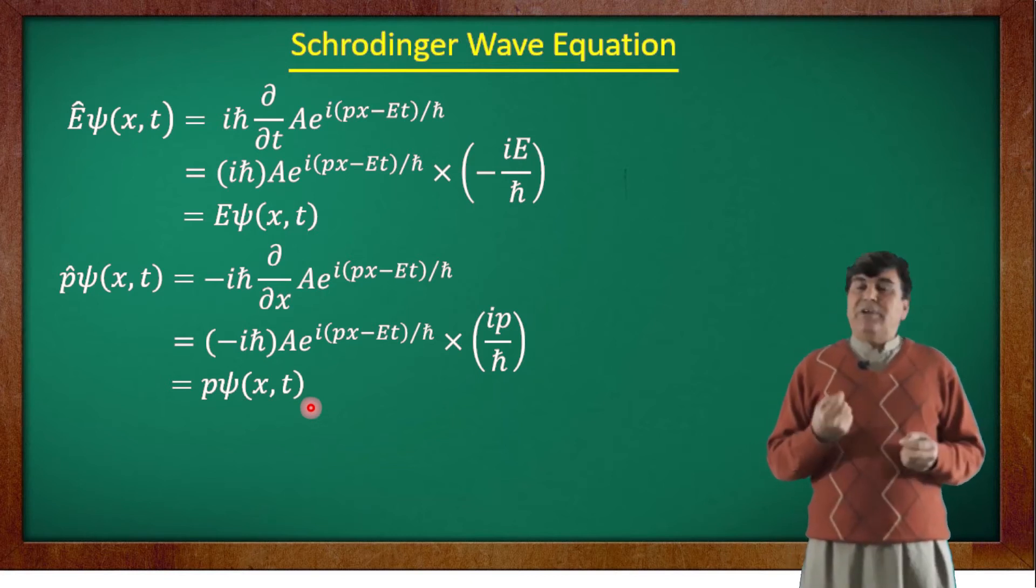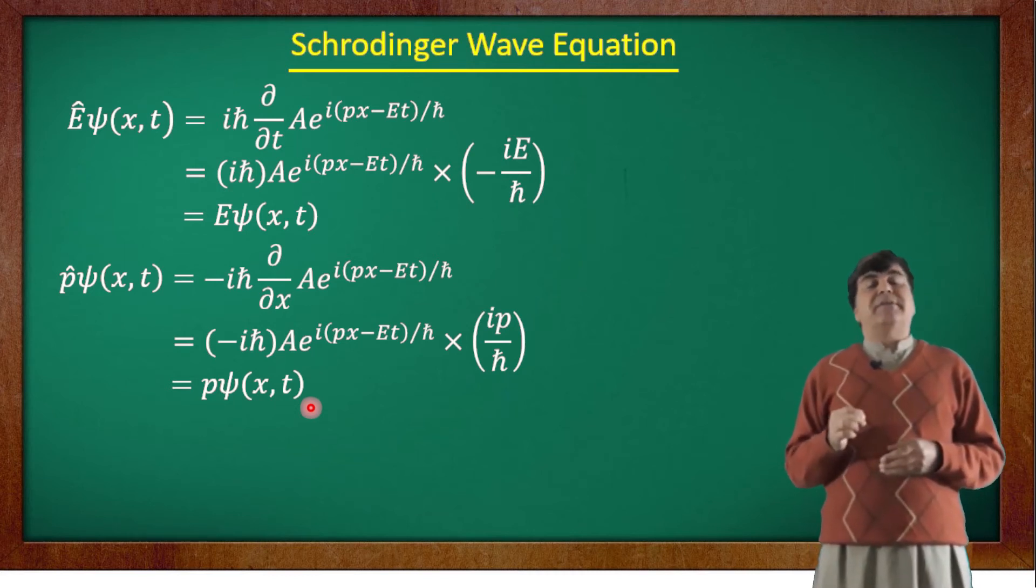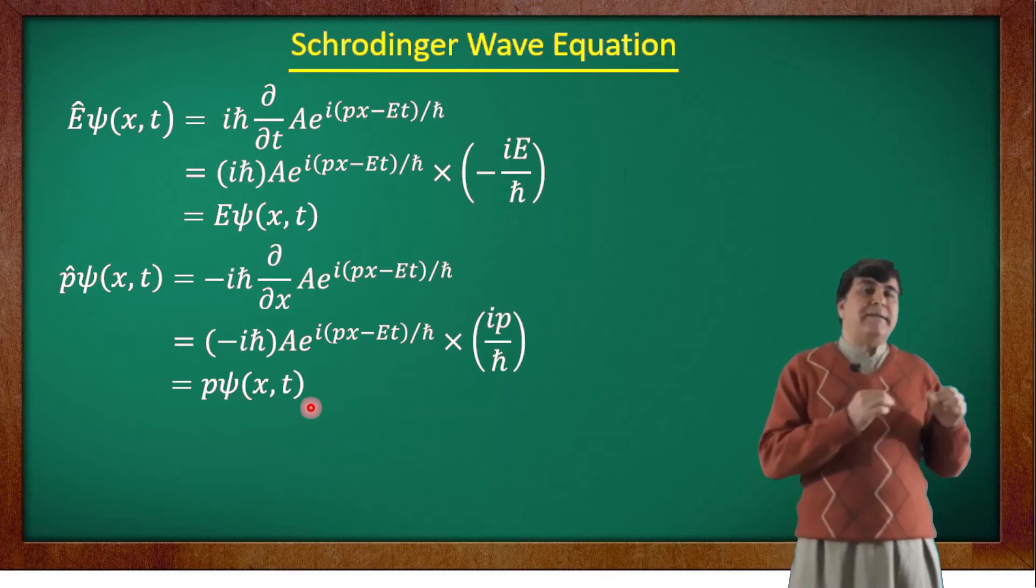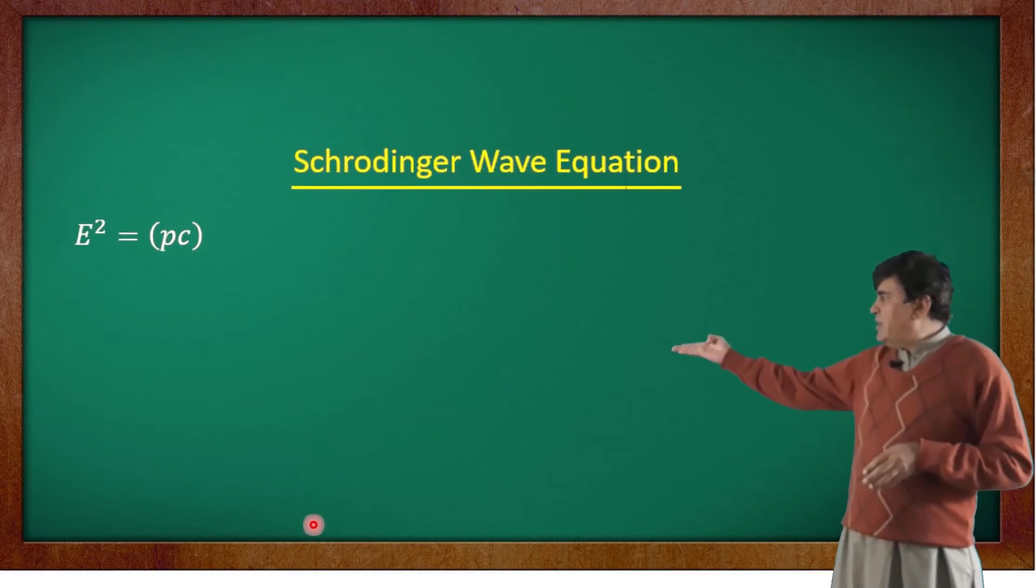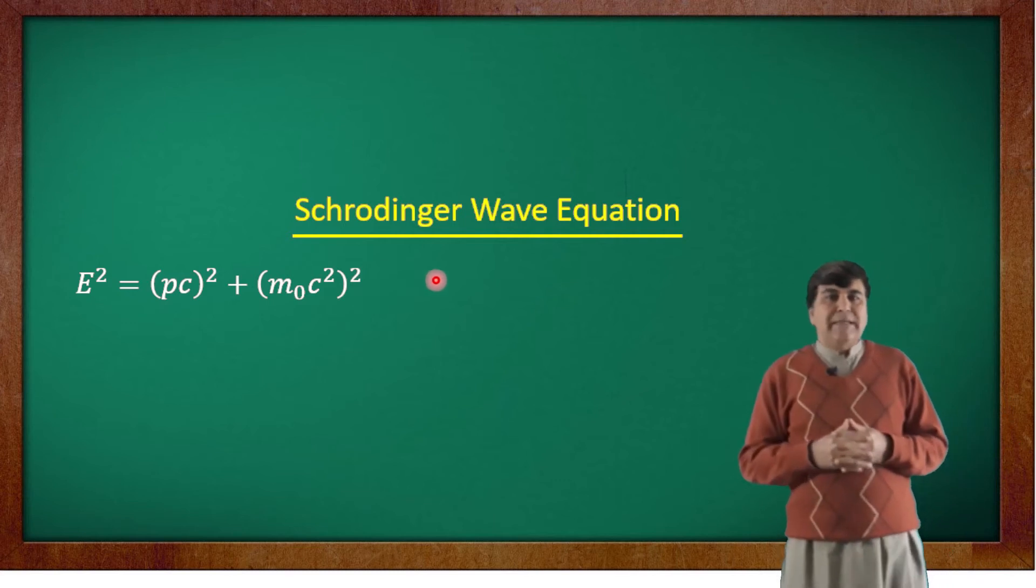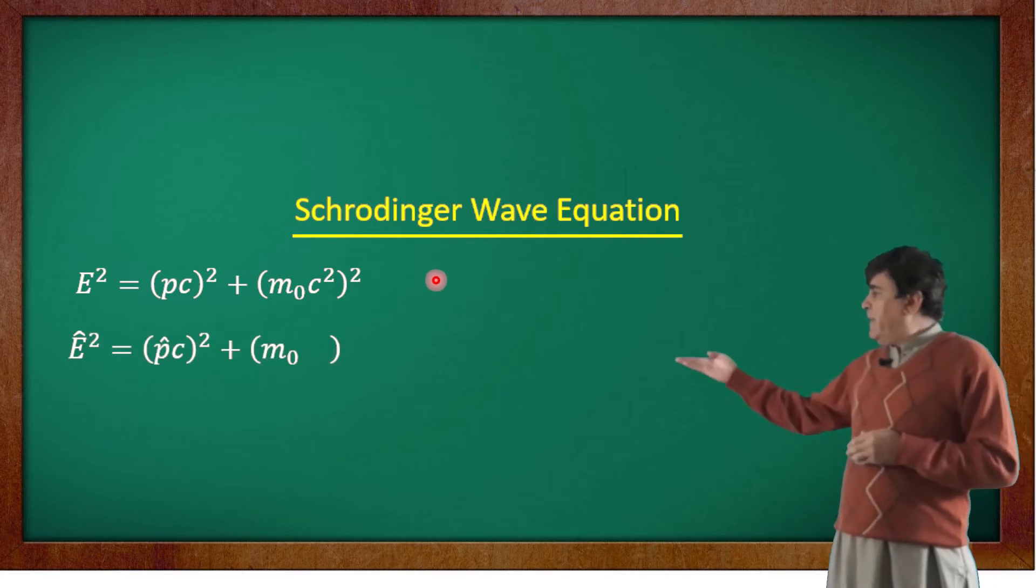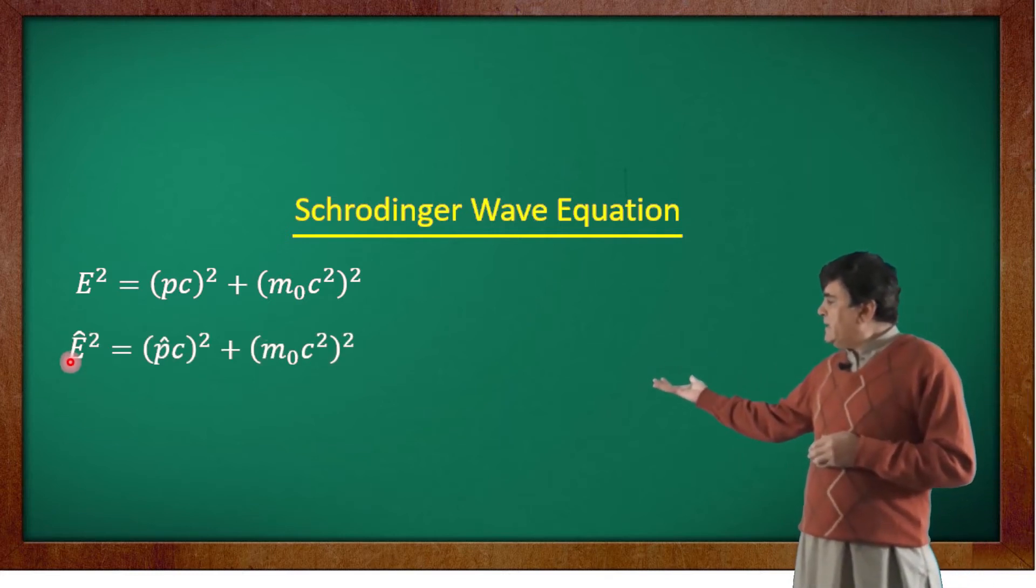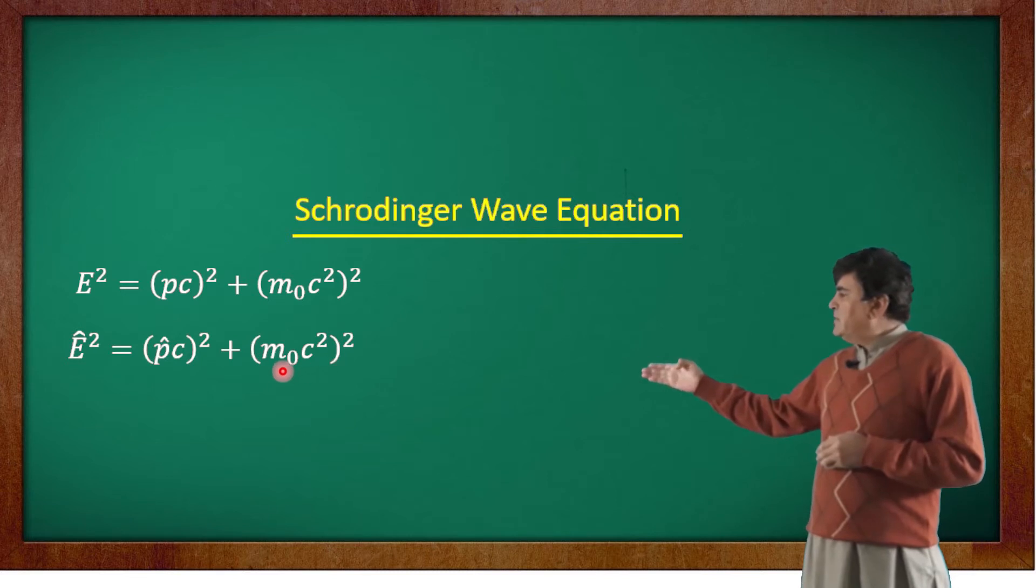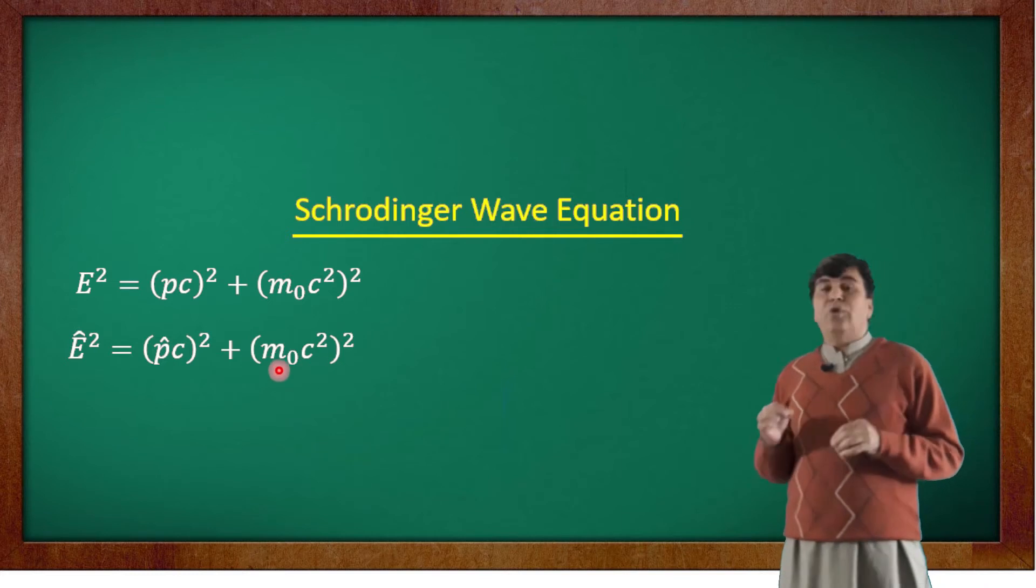What if we apply equation 8 to material particles, that is particles having rest mass? For such particles, the energy and momentum are linked via the rest mass energy in the form of this equation, which is the relativistic energy-momentum equation. The corresponding operators for this form of energy can be written into this form: the operator E squared equals operator P times c squared plus m₀c² whole squared. The last term is just a number; it carries no operator.